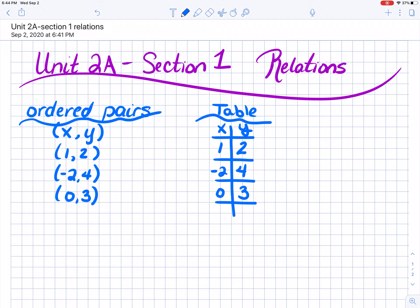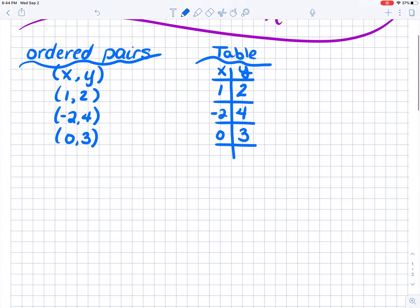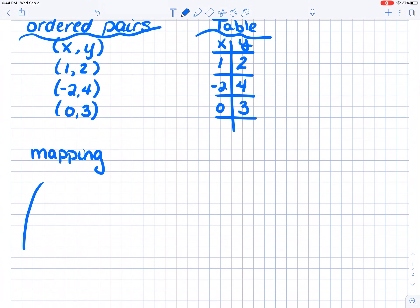Now the next thing that you may not have ever seen is called a mapping. Now a mapping starts with two, usually two ovals. What I usually do is I like to list from least to greatest because we don't want to repeat numbers in that mapping. So no repeated numbers in an oval.